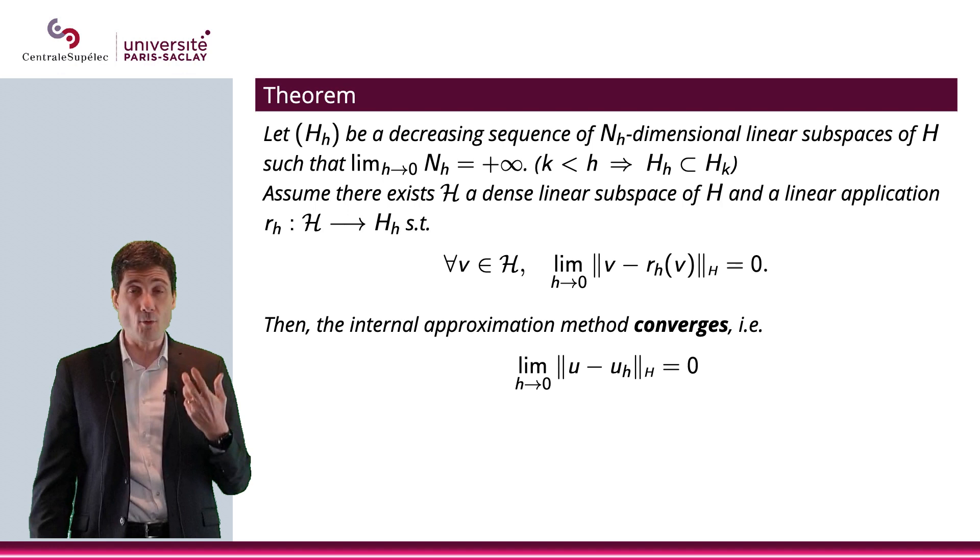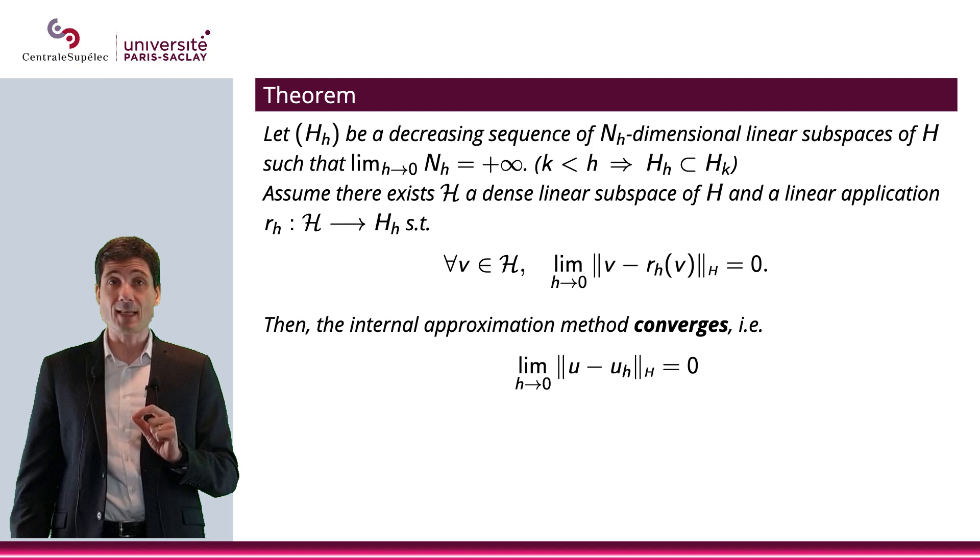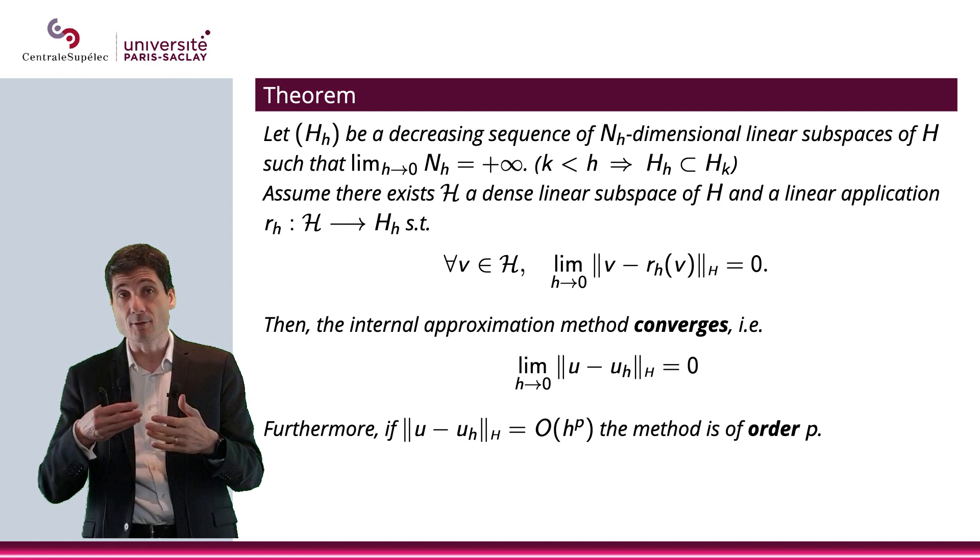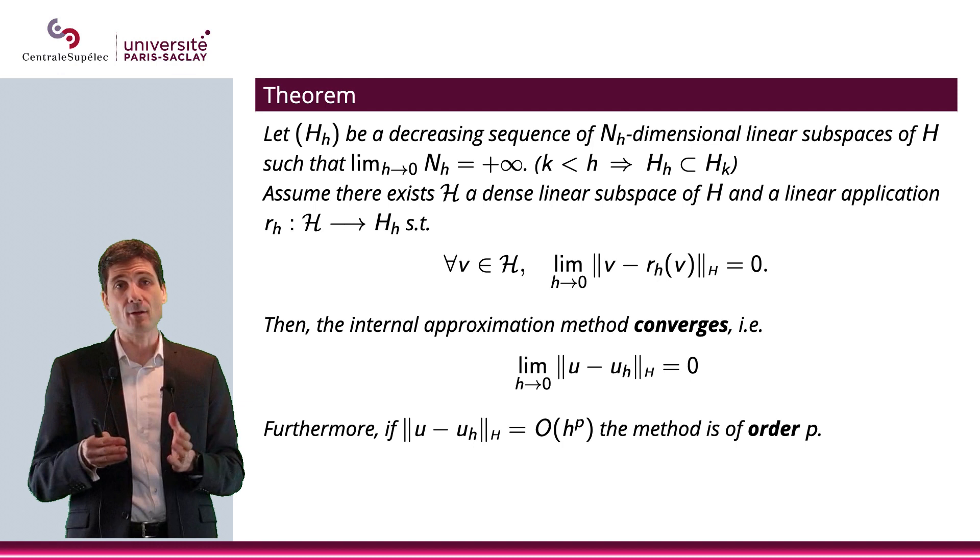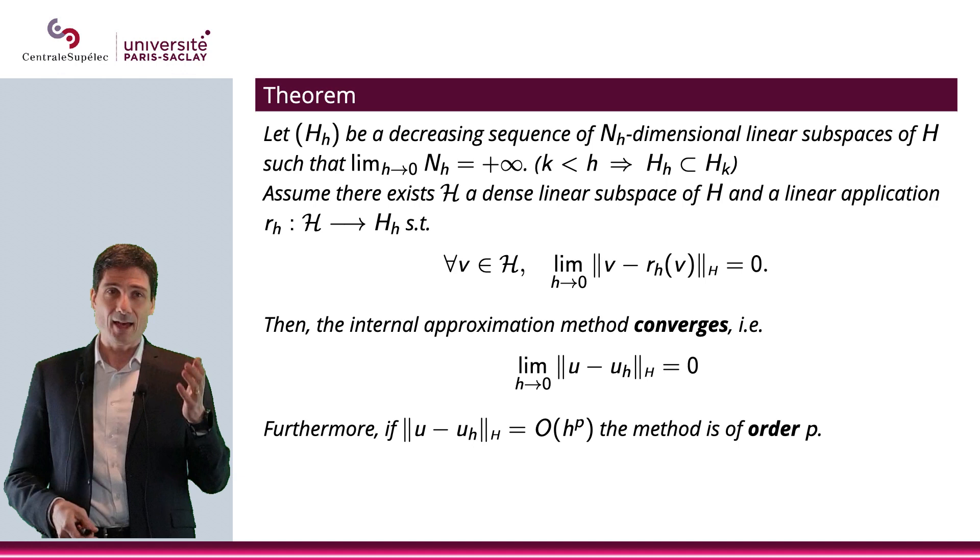So we make this hypothesis, we suppose this, and then what happens is that the internal approximation method that we just showed will converge, which means that the limit of ||u - uₕ||ₕ will go to zero when H goes to zero. And what we have here is that if we can even say that it goes to zero as a O(hᵖ), that's a Landau notation, then the method is of order p that is consistent with what we defined as order of methods earlier when we talked about ODEs. And finally, I would like to say that rₕ is called the interpolation operator.